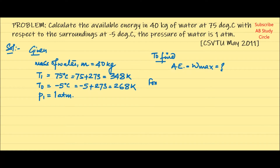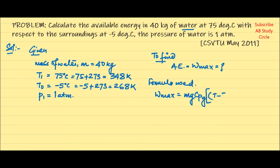We have to find the available energy, or W_max — that is your exergy. The formula used will be for the available energy from a finite energy source. Here, this water is the finite energy source. The formula used will be: W_max = m × Cp × [(T − T0) − T0 × ln(T / T0)].